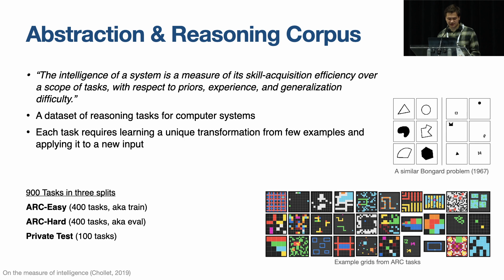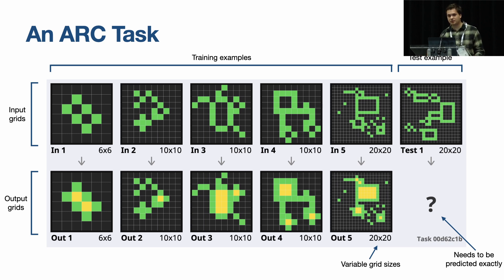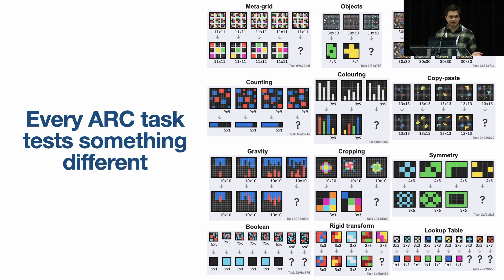ARC consists of 900 handcrafted tasks on variable-sized grids of pixels, split into three datasets. This work focuses on the two public datasets. Here's an example of an ARC task — they all look like this. Basically, you're given a handful, maybe three training examples, each representing the same transformation between an input grid and an output grid. In this example, what you need to do is fill in the enclosed areas at the top with yellow. The computer's job is to learn that transformation and apply the same one to the test example to produce the missing grid, and you've got to get that exactly right to score a point. What's interesting is that everyone in this room could easily solve most of these problems, but computers are really bad at this sort of stuff.